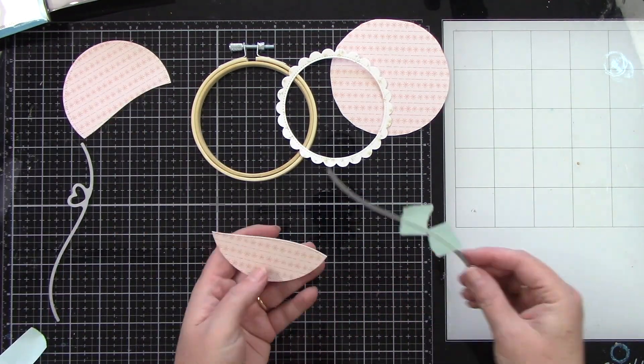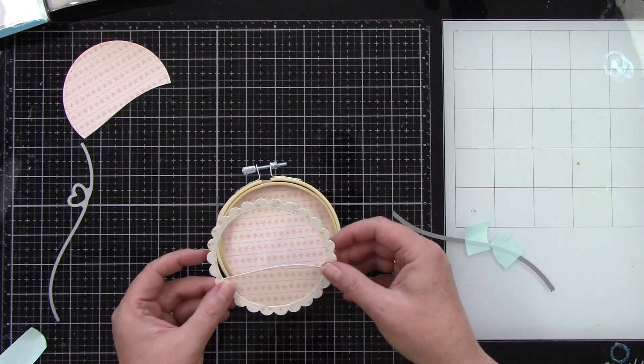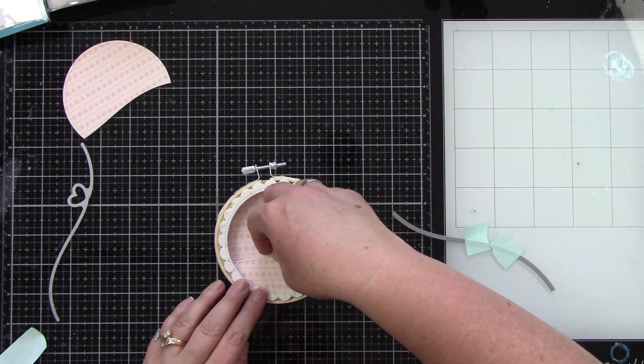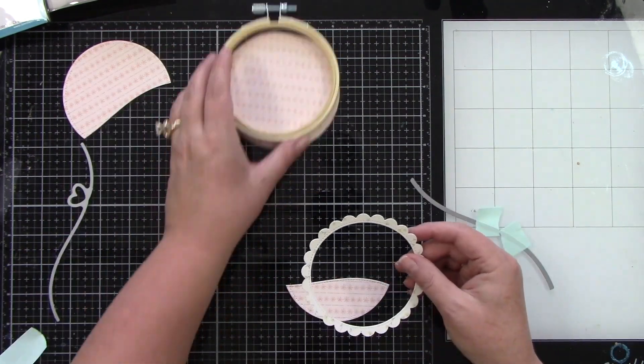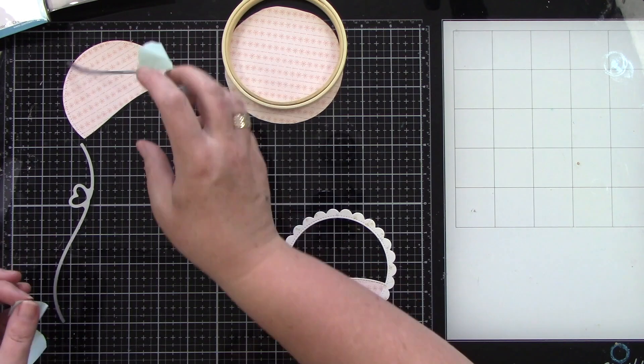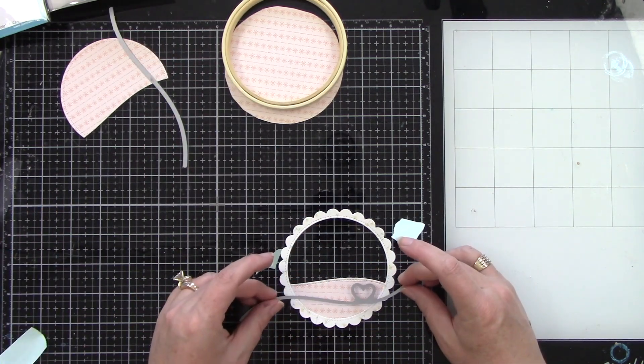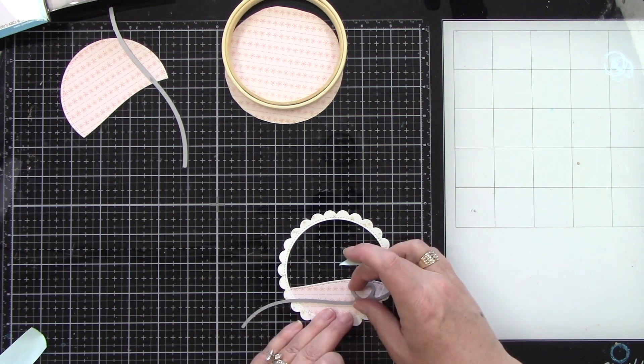Now I have my bottom piece that's going to go behind my frame. Now it'll lay on just like this so you have your back piece and your front piece and both of those are matching cardstock pieces and that is from the What's Sewing 6x6 paper pad.